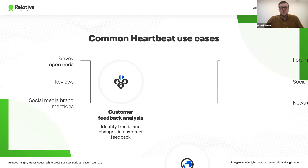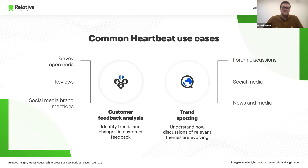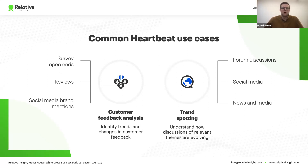The second common use case is trend spotting — looking at public discourse and online conversations about a particular industry or product category relevant to your business. For example, if you're an electric vehicle manufacturer, you have a vested interest in understanding how public discourse about electric vehicles is changing over time. You might define themes relating to battery life, affordability, performance, and by applying those themes on top of open source data, you keep a pulse on public opinion in your product category.